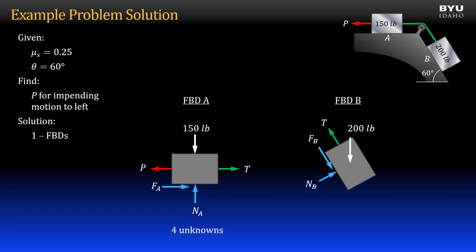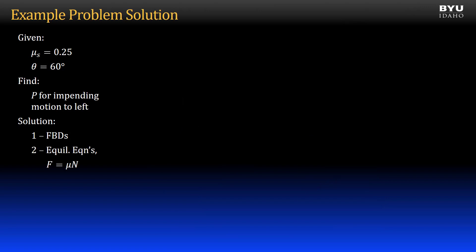Looking at block B, I will use a rotated coordinate system to simplify the equilibrium equations. We have three unknowns at block B, and we can solve for all three by summing forces in the X prime and Y prime directions and incorporating the static friction equation. With T known, the number of unknowns on block A reduces to three, and we can find them the same way. So we will start with block B.